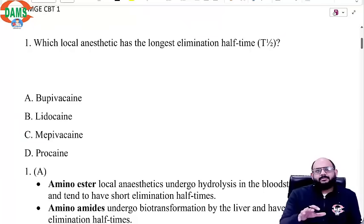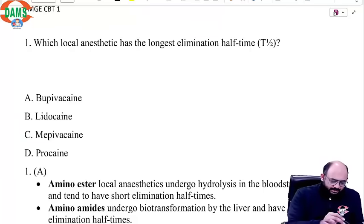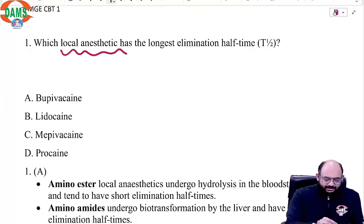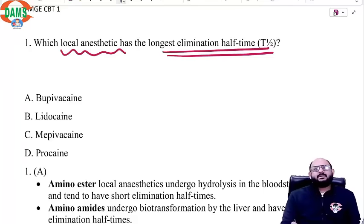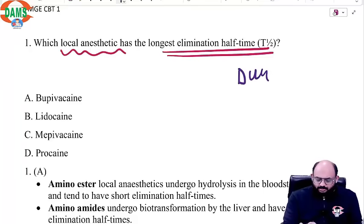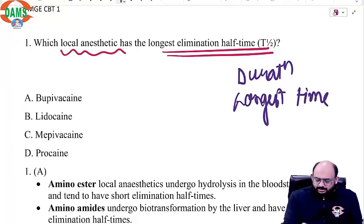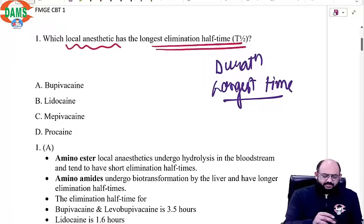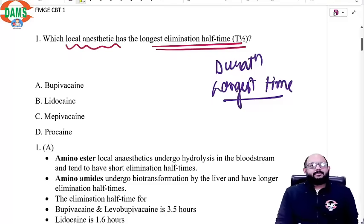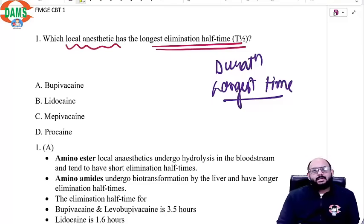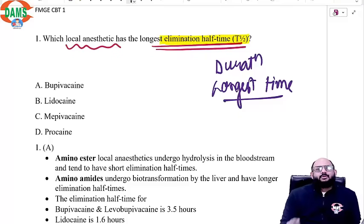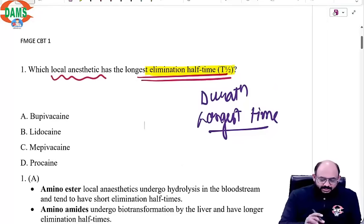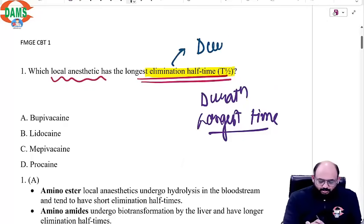These are very simple questions but at the same time they have some concept. The first question is: which local anesthetic has the longest elimination half-life? When somebody writes duration of action, they can simply ask which is the longest in duration, which will act for the longest time, which will require less dosing. What we have done here is change the language of the question. Sometimes a question might not be that difficult, but just because the language changes, our perception changes — 'longest elimination half-time.' Although it is talking about metabolism, what it essentially means is which has the longest duration of action.